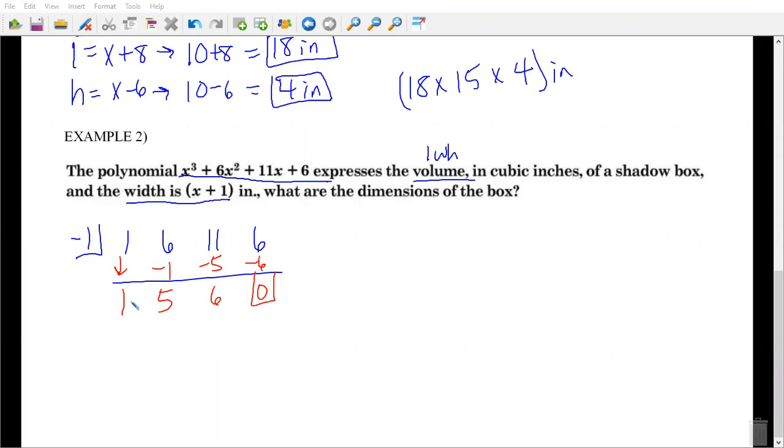Negative 1 times 6 is negative 6, and we end up with 0. So our quotient is 1x squared plus 5x plus 6. So to find our length and our height, we have to factor that.